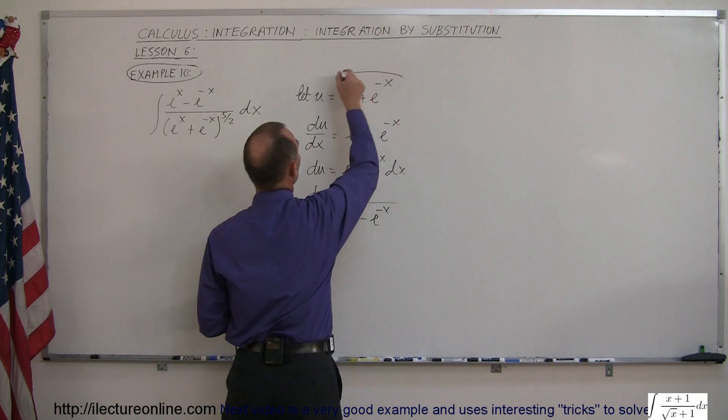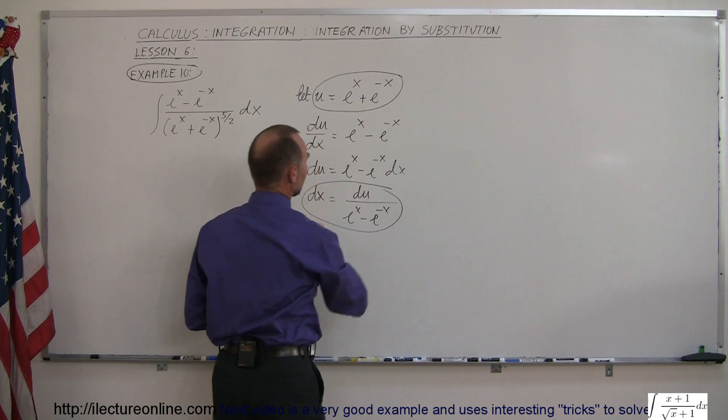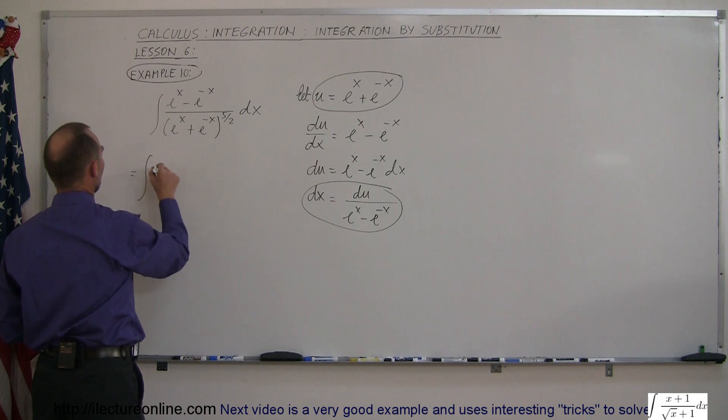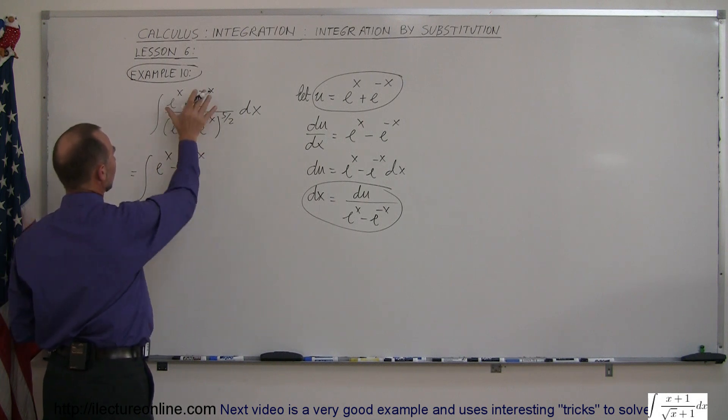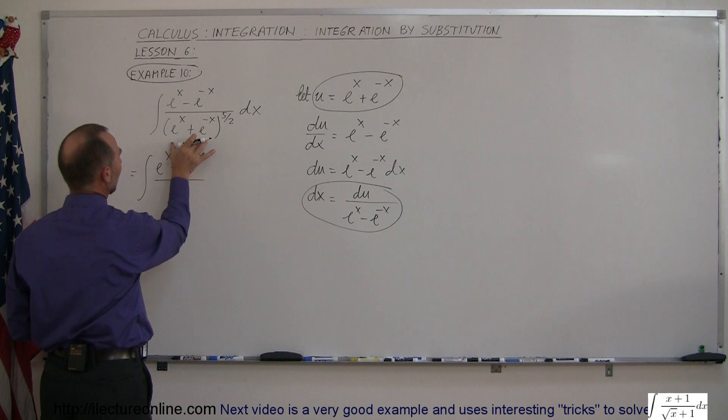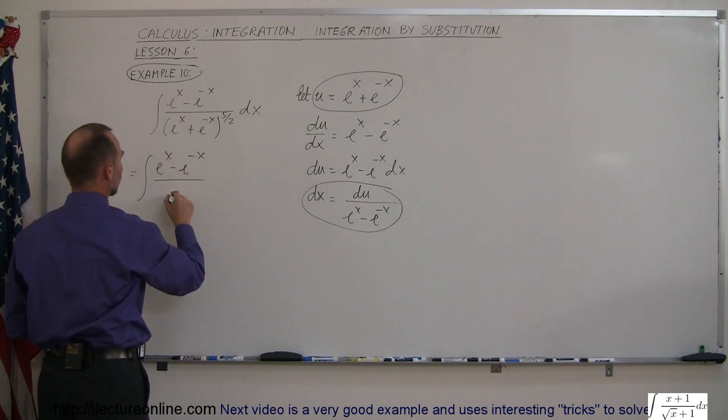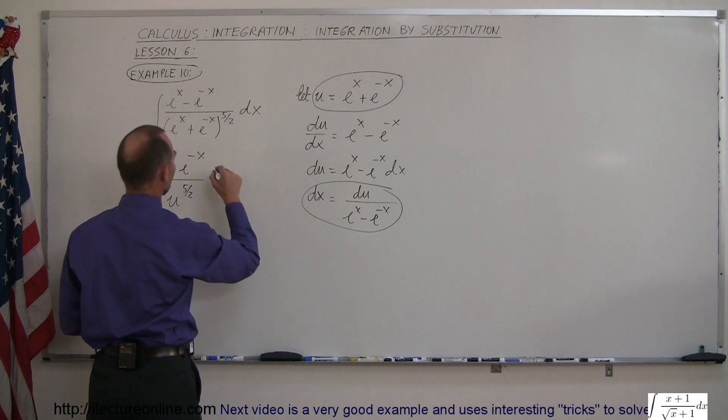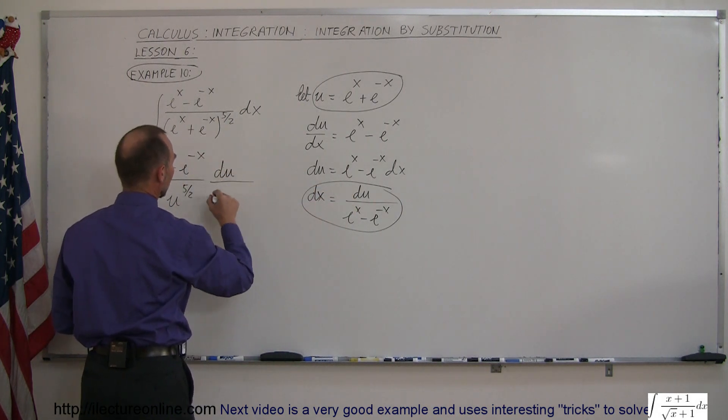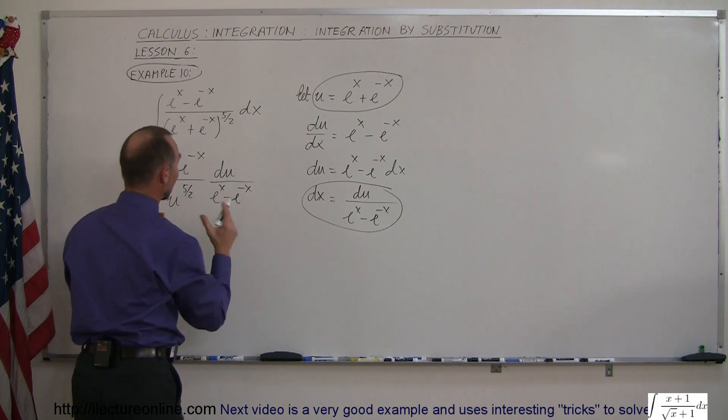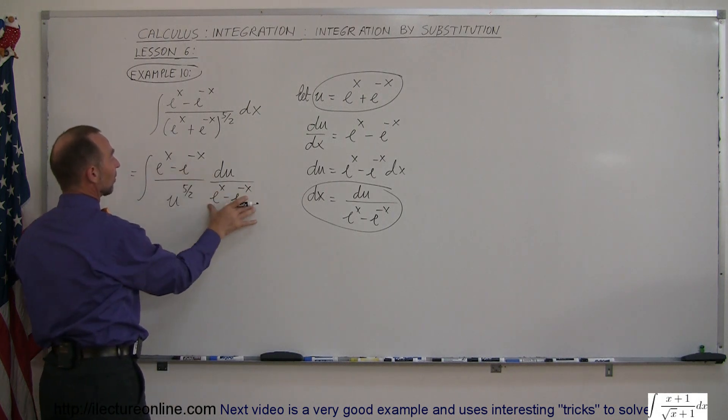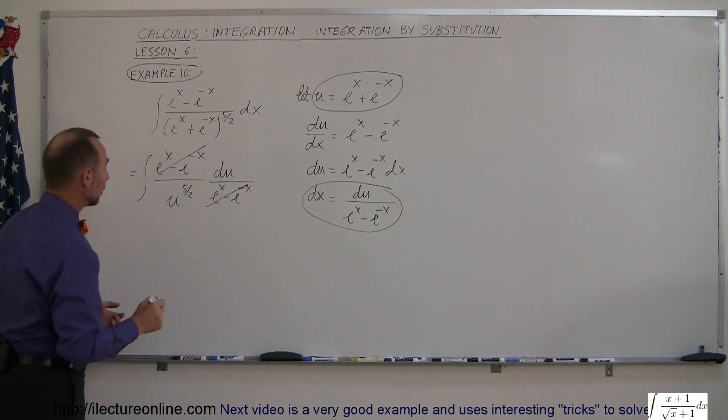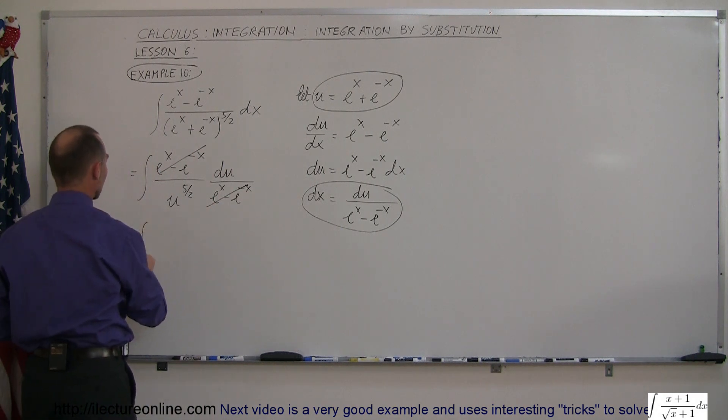We're going to then substitute this and this inside the integral. And if we do that, this now becomes the integral of e to the x minus e to the minus x, that's still the numerator, divided by this quantity which now has become u. So u to the five halves and then dx is going to be substituted by du over this, du over e to the x minus e to the minus x. And then notice that this and this is exactly the same, so this numerator here cancels out that part of the denominator.